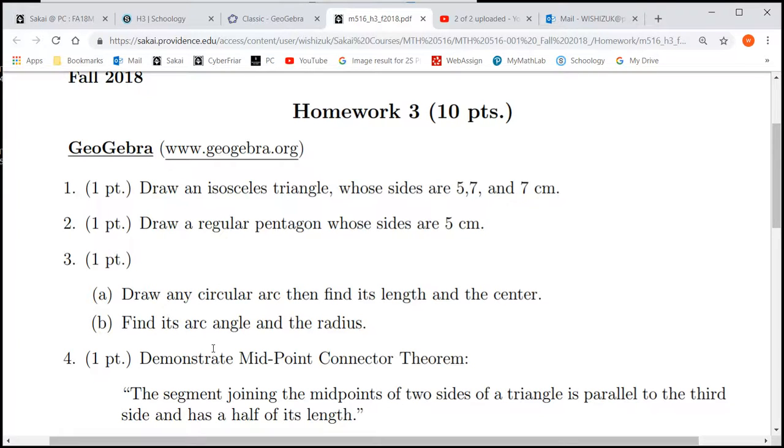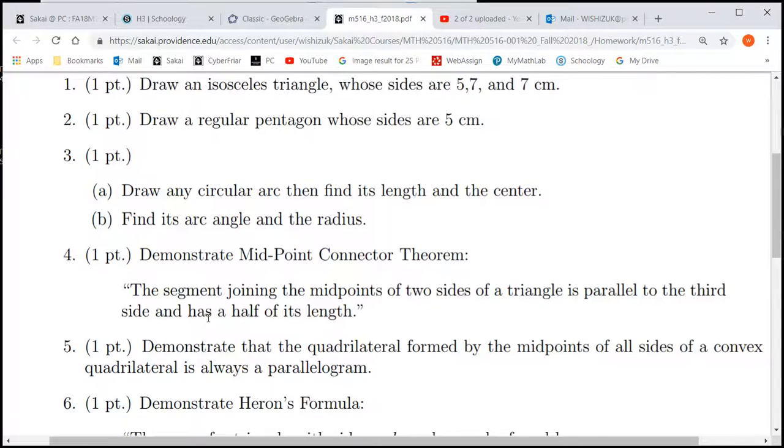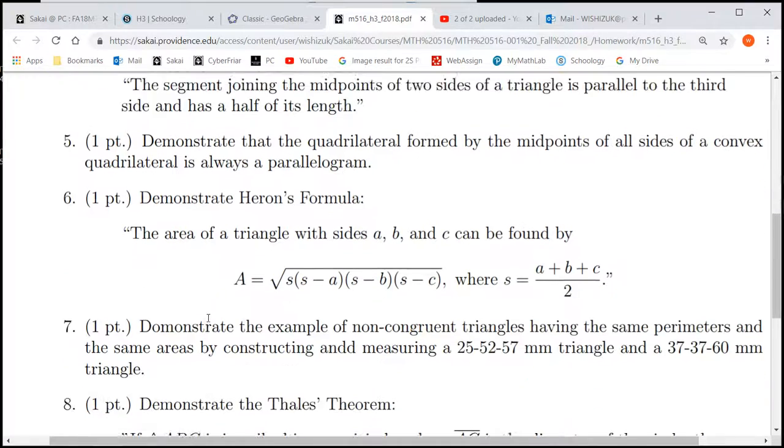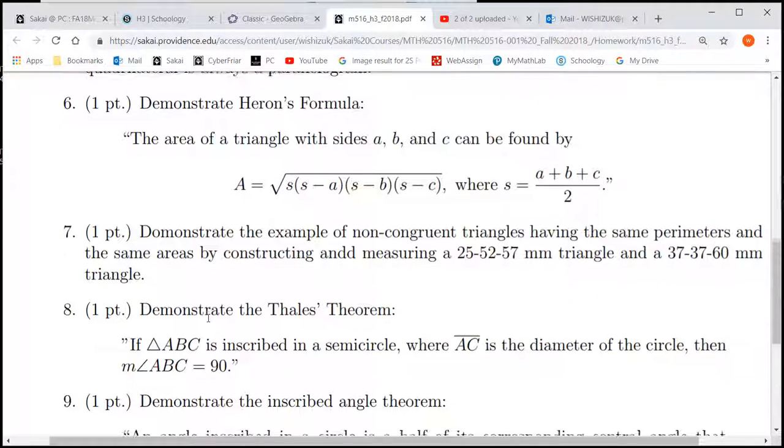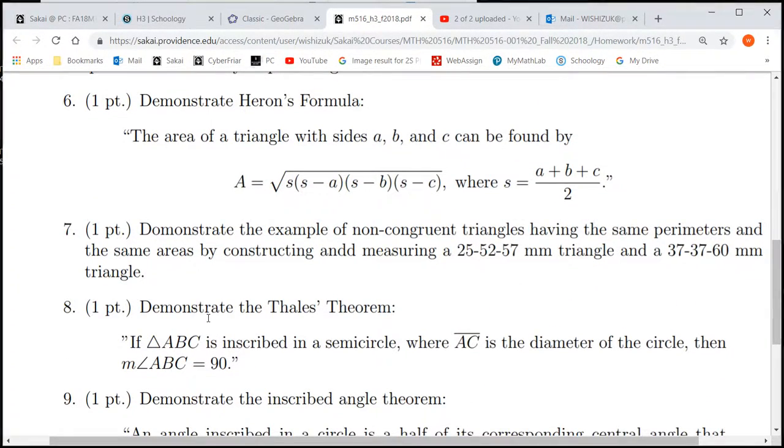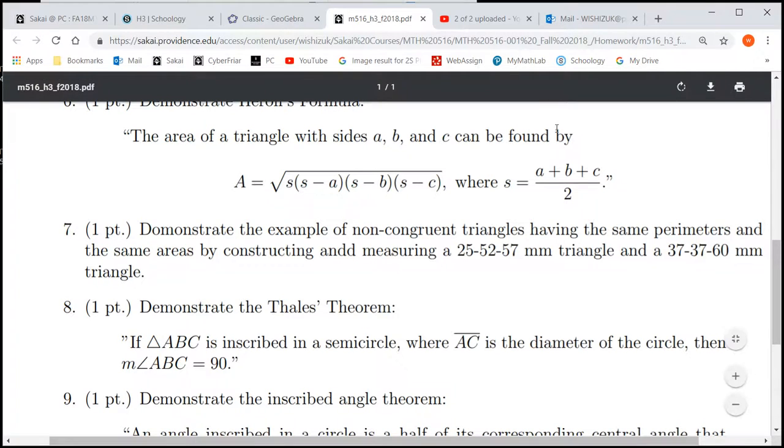OK, let's look at homework 3, problem number 6. It says demonstrate Heron's formula. The area of a triangle with sides a, b, and c can be found by this formula, where s is a plus b plus c over 2.